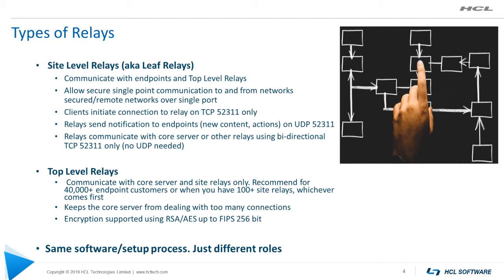A single site relay, sized properly, can handle up to 5,000 endpoints. However, if you really want fast, rapid communications and real-time monitoring, try to shoot for no more than one to two thousand endpoints per relay. This keeps things distributed and doesn't put too much effort on one area of your deployment.